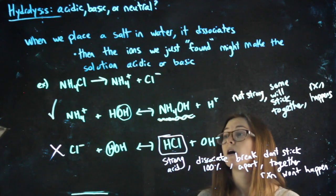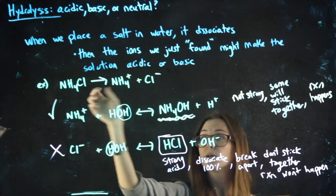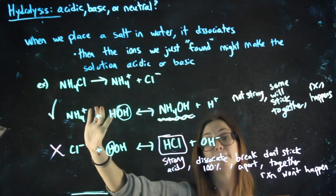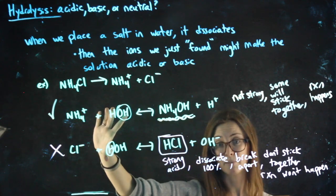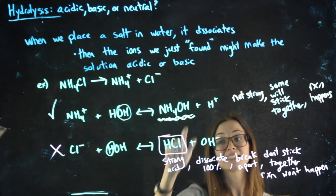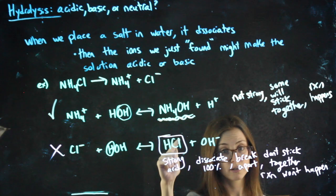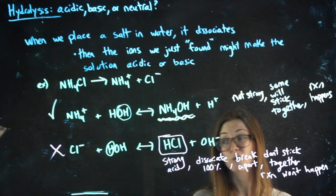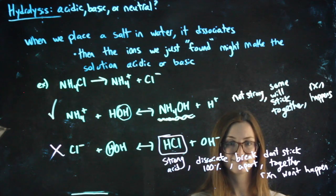So, those are your options. Identify it's a salt. Break it apart. Take those ions and see how they might react with water. So, we're testing them against water. And then, whichever one happens, whichever one doesn't produce a strong, is the one that's going to happen. And that can tell us if it's acidic, basic, or if neither happen, neutral. Try those.